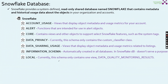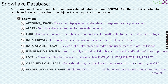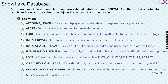Moving on, there is a local schema which currently contains only one view: the data quality monitoring results. Then organization usage, which contains the views that display the historical usage of data across all the accounts in your organization. Reader account usage is similar to the account usage schema but only contains the views relevant to reader accounts — that is, consumers and readers which we will see in more detail in the data sharing video. The final one is the ML schema, which contains ML functions, a suite of analytics tools built by Snowflake.